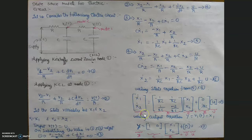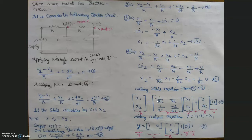The state space equation is written as x-dot equals A times x plus B times u, where x-dot is the state variable and the dot represents it is a first-order differentiated equation. A is a matrix representing the parameters that affect the state variables — such as resistance and capacitance — that affect the particular system.